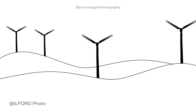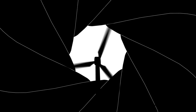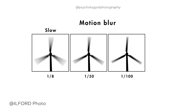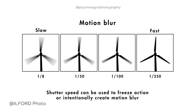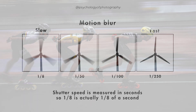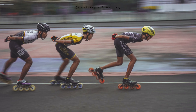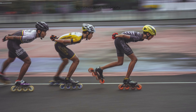Shutter speed also plays a critical role in capturing movement in an image. A fast shutter speed will freeze movement and create a sharp image, while a slow shutter speed will create a sense of motion blur and can be used to convey movement in an image. For example, if you are shooting a sports game, you'll want to use a fast shutter speed to freeze the action and create sharp images.